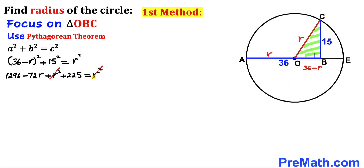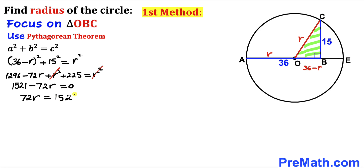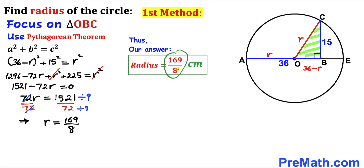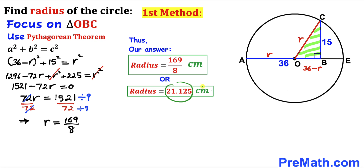The R² terms cancel on both sides. Combining like terms and moving 72R to the other side gives 72R = 1521. Dividing both sides by 72, and simplifying by dividing numerator and denominator by 9, our radius R turns out to be 169/8 centimeters, which equals 21.125 centimeters. That concludes the first method.